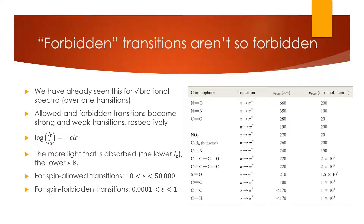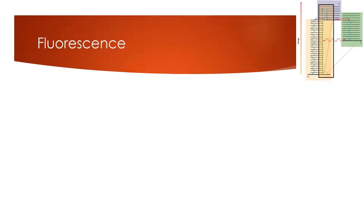So what happens when our molecules absorb light? We'll talk about the properties of fluorescence. When a molecule absorbs light, it goes from the ground state to the excited state, obeying the ΔS = 0 selection rule. If it starts in the singlet state, it goes to the singlet excited state. The Franck-Condon principle tells us it can go into many different vibrational states. This green line is one example of going from the ground state to the fifth vibrationally excited state, and it could also go into many other vibrationally excited states.